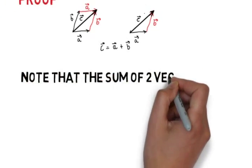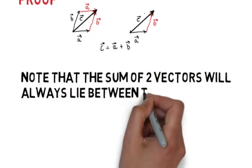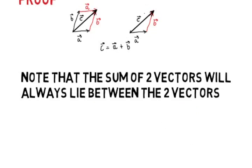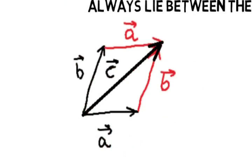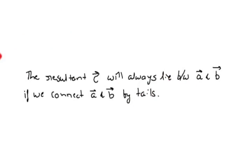Note that the sum of two vectors will always lie between two vectors in terms of direction. Here direction of c will lie between the direction of a and b. Thus the resultant c will always lie between a and b if we connect a and b by tails.